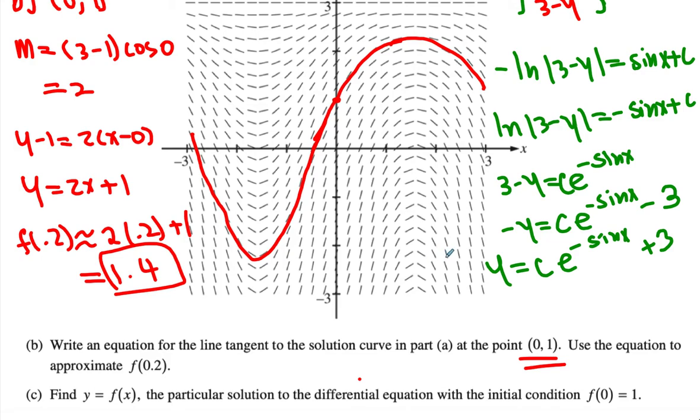When I plug in 0, I should be able to get 1, so then 1 equals—when you plug in 0 here in place of x, sine of 0 becomes 0, hence the entire expression here becomes 1. So we are left with c plus 3. Then we get to realize that c must be equal to negative 2.